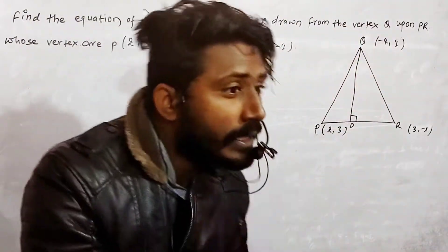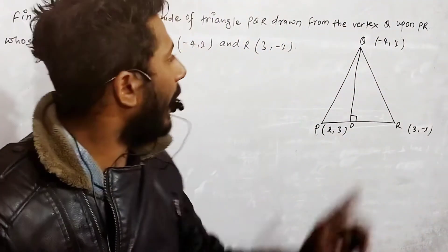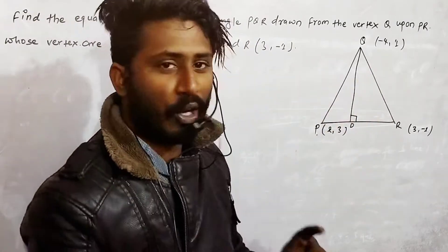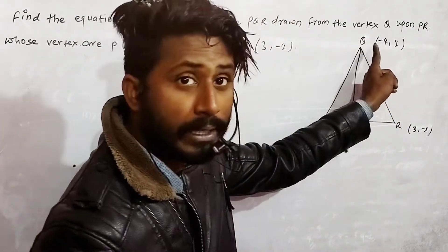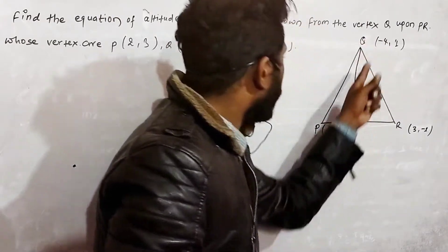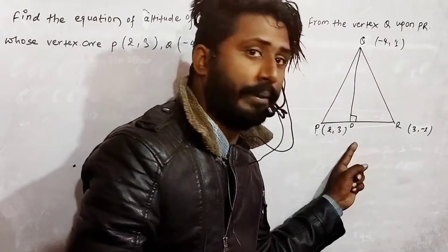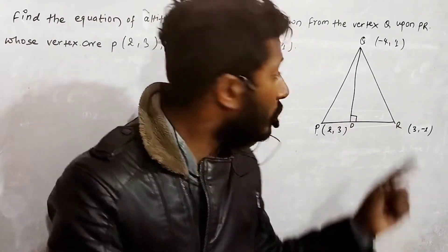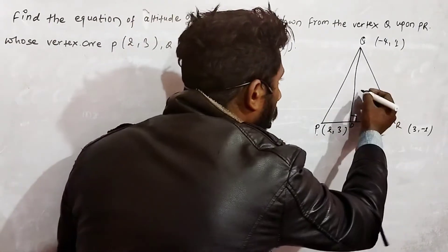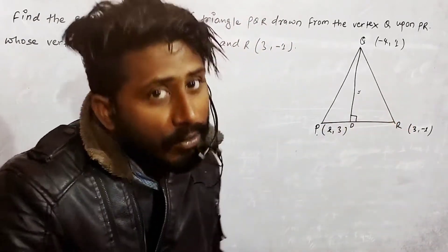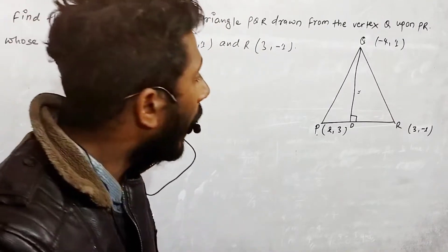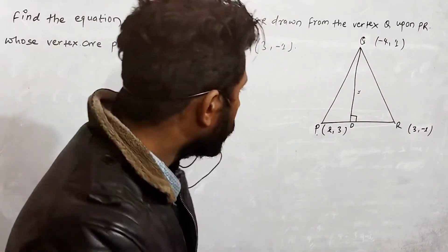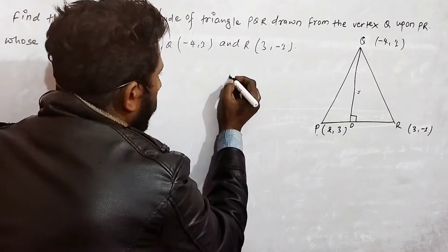We have a line passing through a point, and that line has a slope. We need to find the equation of line QD. To do that, we need the passing-through point and the slope. So first we find the slope of QD.